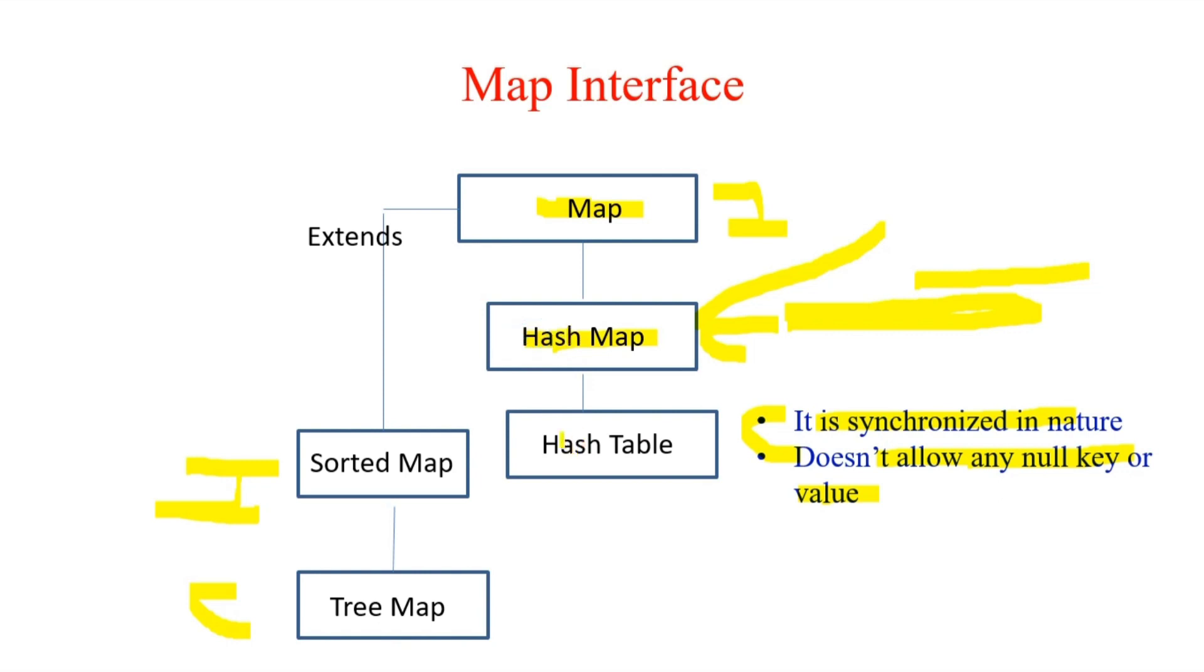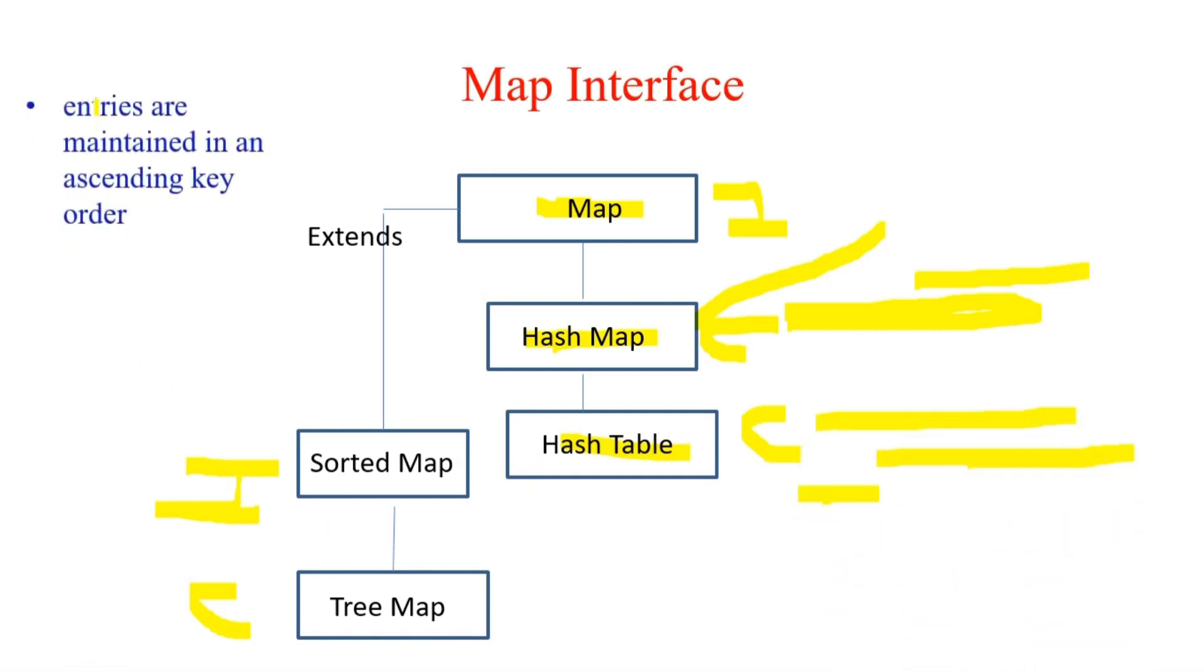Now, moving ahead to SortedMap, all the entries are maintained in ascending order here. So this is how sorted maps always work—it's ascending order in which the objects are maintained. The best way to do that is to implement red-black tree implementation for the sorting purpose.